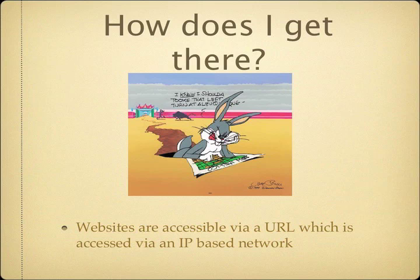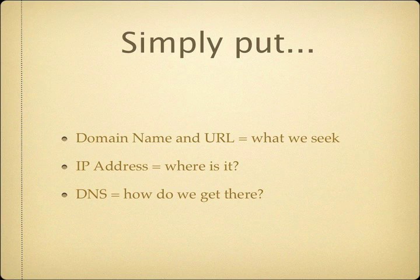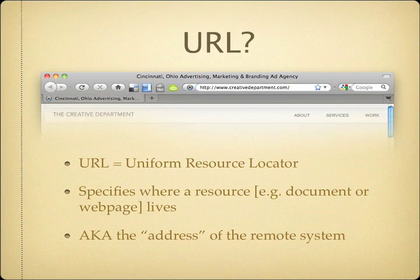How does it get there? Websites are available via a URL, which is accessed via an IP-based network. Simply put: a domain name — a domain name and URL is what we're seeking. An IP address is where it is, and the DNS defines how to get there. URL stands for Uniform Resource Locator, and that's the line you type into the input field at the top of every browser. It specifies where the resources you're looking for live — it's the address for that remote system.